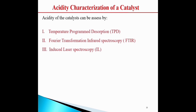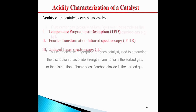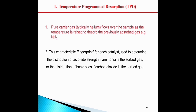Acidity characterization of a catalyst. Acidity of the catalyst can be assessed by temperature programmed desorption (TPD), Fourier transform infrared spectroscopy (FTIR), or induced laser spectroscopy (IL). In TPD, a pure carrier gas, typically helium, flows over the sample as the temperature is raised to desorb the previously absorbed gas such as ammonia. The characteristic fingerprint of each catalyst is used to determine the distribution of acid site strength if ammonia is the absorbed gas, or the distribution of basic sites if carbon dioxide is the absorbed gas.